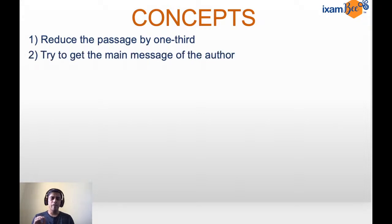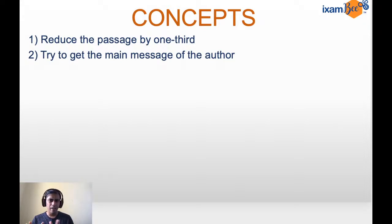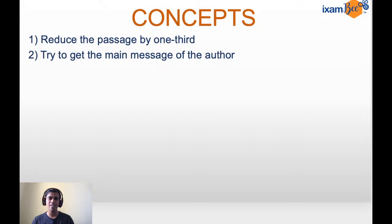The very basic concept is that you have to reduce the passage by one-third. A very critical component is to get the main message of the author. You have to remove whatever is unnecessary, whatever is superfluous, and arrive at the main message — that underlying point the author is trying to make. A fun example I give: if you've seen a cricket match, you can describe every single ball that happened.